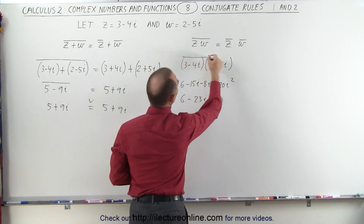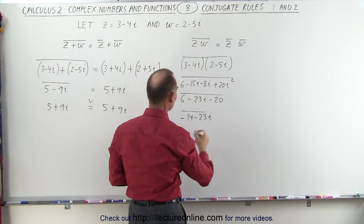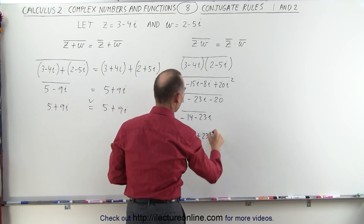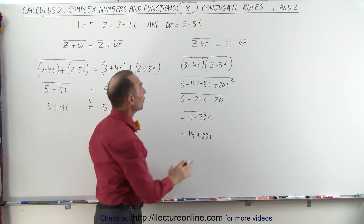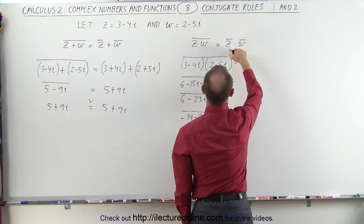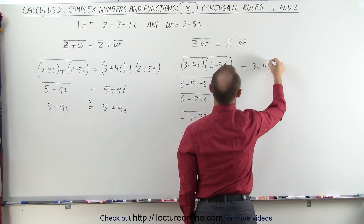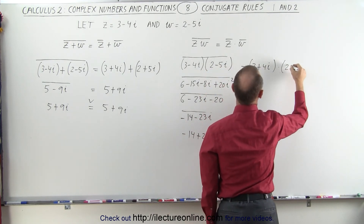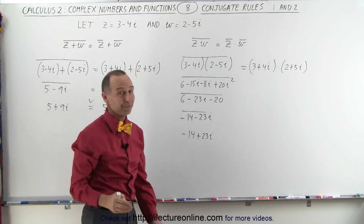Of course we want to take the conjugate of that, so when we take the conjugate of minus 14 minus 23i, that becomes minus 14 plus 23i. Now we're going to see if that gives us the same result on the right side. This should equal the conjugate of z, which is 3 plus 4i, multiplied times the conjugate of w, which is 2 plus 5i.